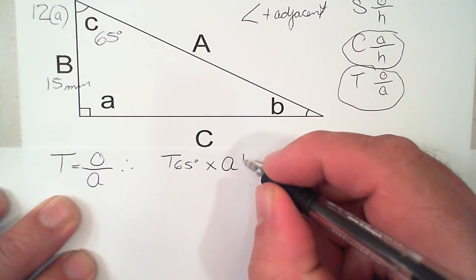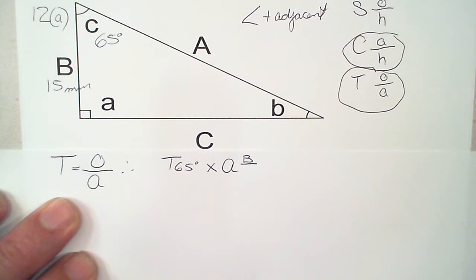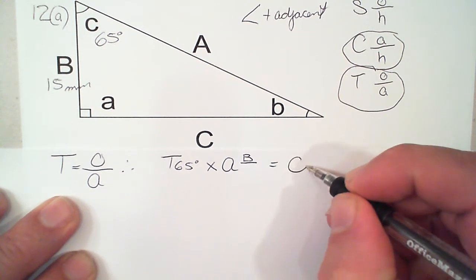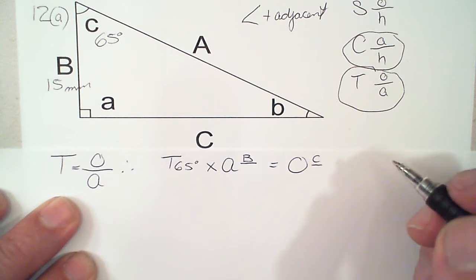So we will call that Line B, and that will equal our opposite, which is Line C. So it's a C with a line underneath there.